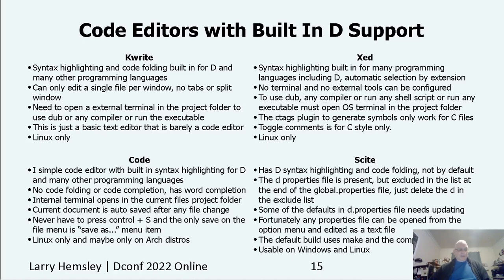There's another one called Code that I've only seen on Arch Linux distributions. It has no code folding or code completion, but it does have Git integration. The internal terminal opens in the current file's project folder and can be used to run, build, or clean the project using dub, or compile a file using DMD, LDC, or GDC, or run the executable. The document is auto-saved after every change, so you never need to press Ctrl+S. It's a really good editor for the edit-compile-run cycle.